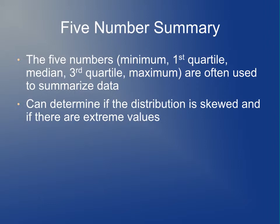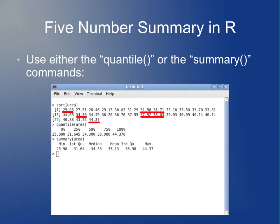Sometimes people will use minimum, maximum, median, and first and third quartile to summarize the data. This is often called the five-number summary. It's handy—sometimes it can help you determine if your distribution is skewed and if there's any extreme values. Here's an example of a five-number summary in R. You can compute it using either the quantile command or the summary command. I usually use the summary command because it gives you the mean as well as the median. But if you don't care about the mean, you can just use the quantile command with the default parameters, and it will give you the five-number summary.